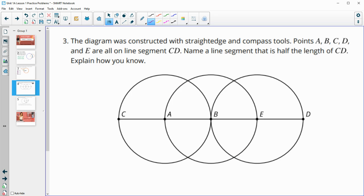Number three says that this diagram was constructed using a straightedge and a compass. Points A, B, C, D, and E are all on this line segment CD here. Name a line segment that is half the length of CD. Well, when we look at this, we see a bunch of radii here.